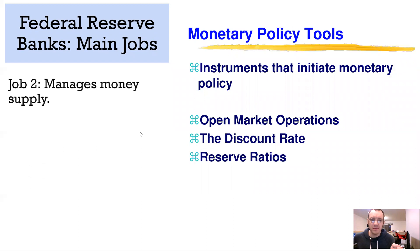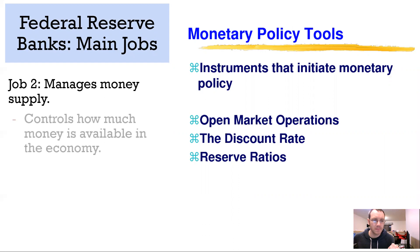The second job is managing the money supply. There are going to be a bunch of different ways they do this — we'll talk about them in more detail as we get along. They want to control how much money is available in the economy and how much money banks have to loan out to people.